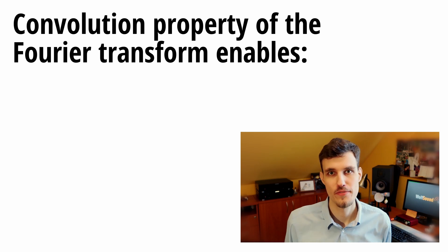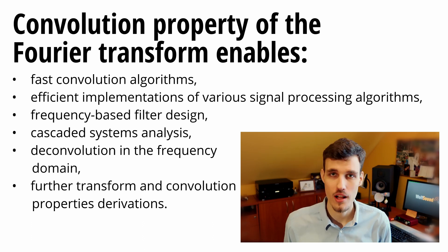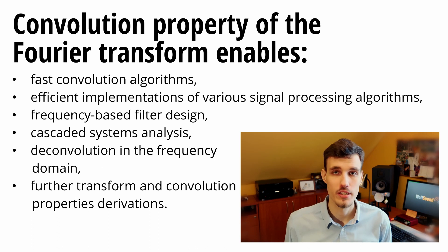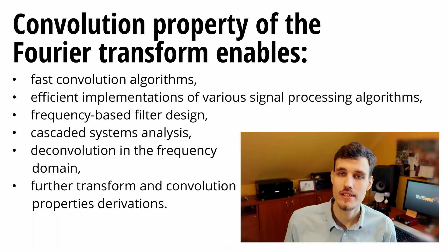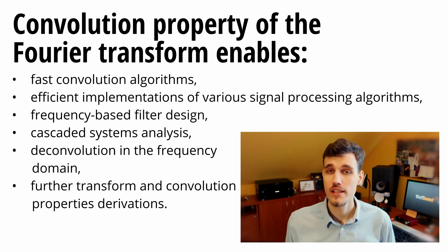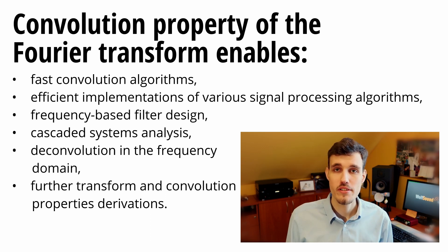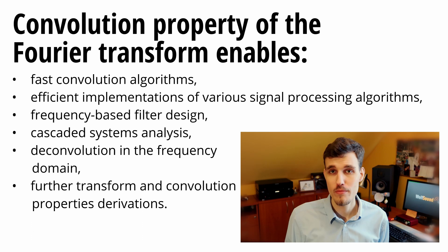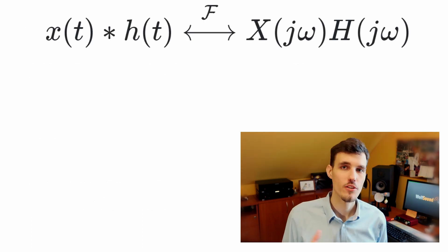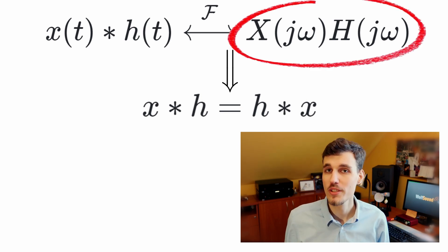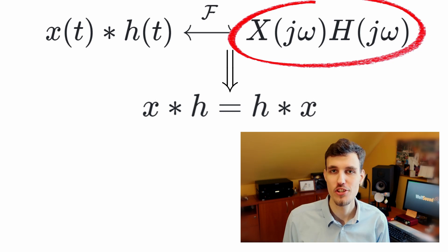The convolution property of the Fourier transform has a number of practical applications. For example, it enables fast convolution algorithms, efficient implementation of signal processing algorithms via frequency domain filtering, frequency domain filter design, cascaded systems analysis, convolution in the frequency domain, and inspection and derivation of various properties of both the Fourier transform and the convolution. For example, we can observe the commutativity property of convolution, because the multiplication operands can be easily exchanged.